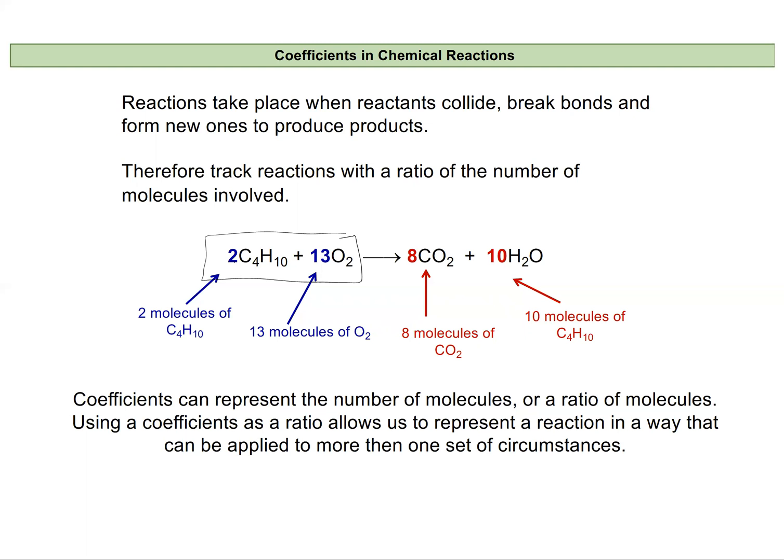And so because those atoms are conserved in these collisions, we can track the changes that occur by looking at the number of atoms of carbon, hydrogen, and oxygen we have in our reactants. We know we have to have that same number in our products. And so we have two molecules of our butane, and that really means that we have 2 times 4, which equals 8 carbon atoms.